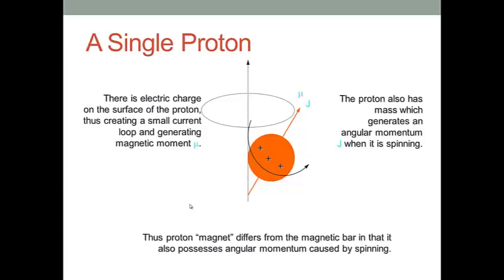Now let's talk about why if we have charge and spin and have odd number of protons, then we can use it for MR imaging. Let's first talk about a single proton.